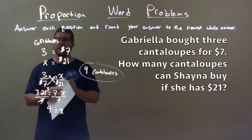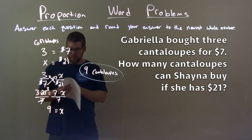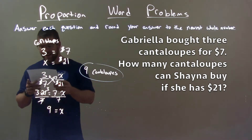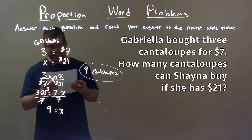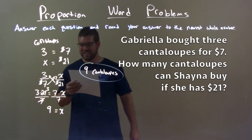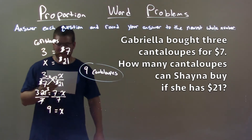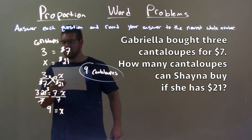Quick recap: we're given the problem — Gabriella bought 3 cantaloupes for $7. How many cantaloupes can Shana buy if she has...